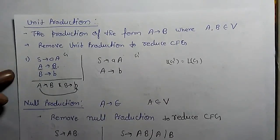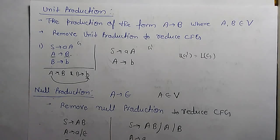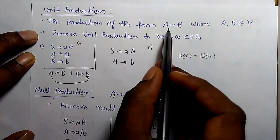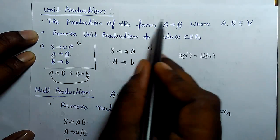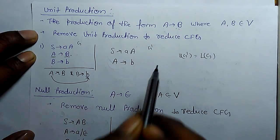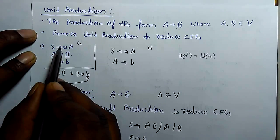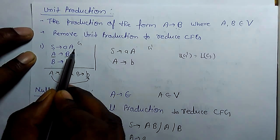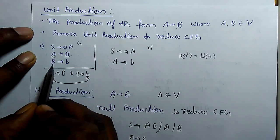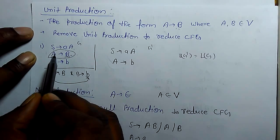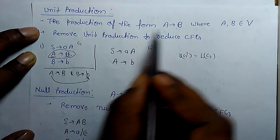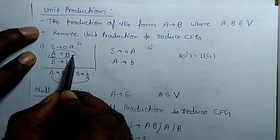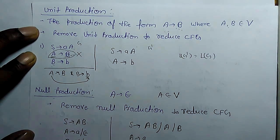The next term is unit production. What is unit production in context free grammar? If there is A derives B, where A and B are both variables, then that is known as unit production and we have to remove it. For example, in grammar: S derives small a capital A, A derives B and B derives b — here A derives B where both are variables, so this is unit production. We have to remove this unit production and there is a method for doing so.